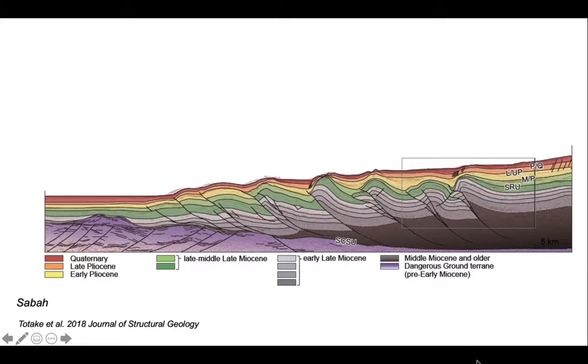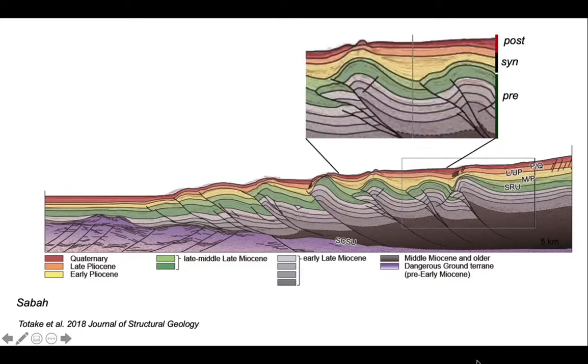Let's look a bit more carefully at this cross section and zoom in towards the right hand side. Here's a zoom in. And on this part of the profile, we can see a pre-kinematic package that includes the gray and perhaps the darker green strata, which are more or less the same thickness as you go around all the fold structures there.